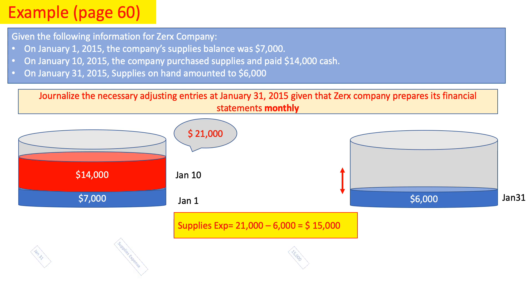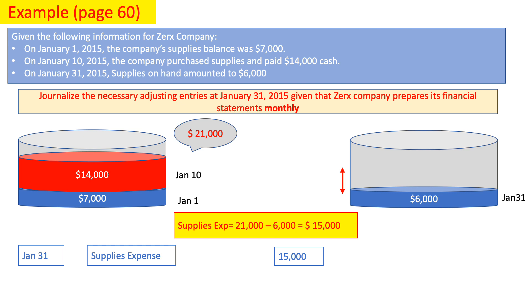Now I'll prepare my adjusting entry. Starting with the date January 31, I'll debit supplies expense for $15,000 and credit supplies for $15,000.